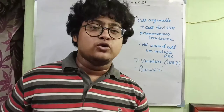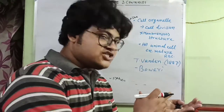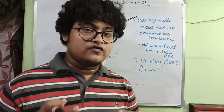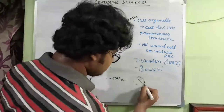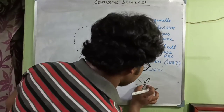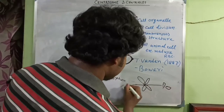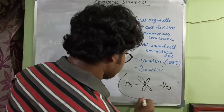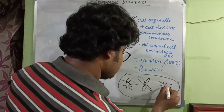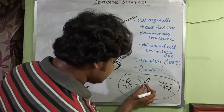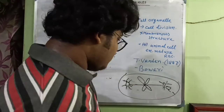The centrosomes form microtubules, also called astral rays, which connect one centriole to another. By the help of this microtubule structure, chromosomes and sister chromatids can be moved and separated. The sister chromatids are separated during the anaphase stage of cell division.